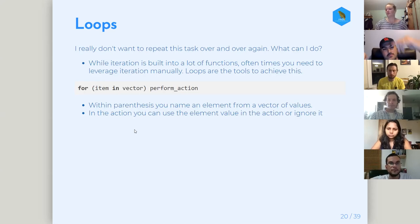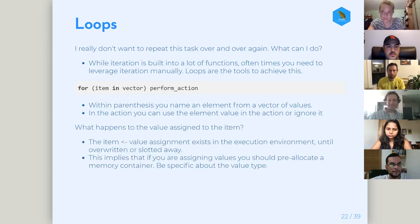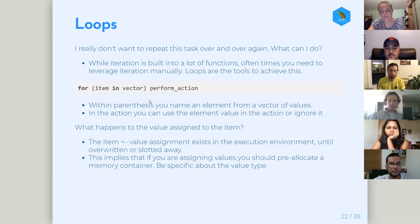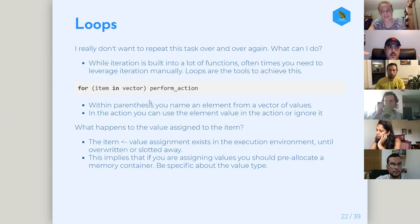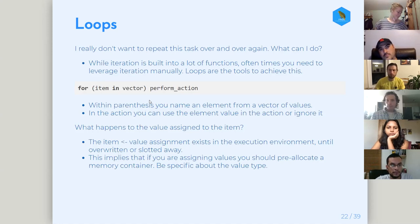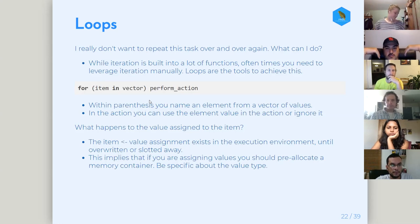Assignment happens in the execution environment. If you're placing the for loop in a function, then assignment is in the function environment, and that value won't be returned to your working environment unless you return the value at the end of the function. If you don't assign it to a name and just return the value in the function, you'll get it in your working environment and can use it as output.